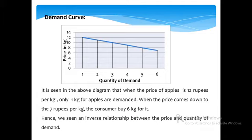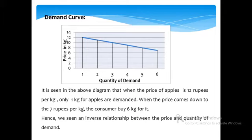This demand curve is drawn with the help of the particular data given, and this demand curve has a negative slope. As seen in the diagram, when the price of apples is 12 rupees per kg, only 1 kg of apples is demanded. When the price comes down to 7 rupees per kg, the consumer buys 6 kg. Hence, we see an inverse relationship between price and quantity demanded.